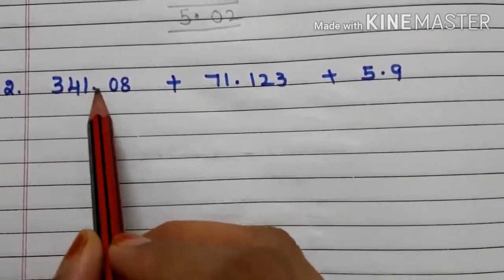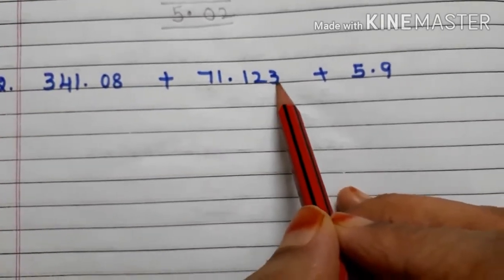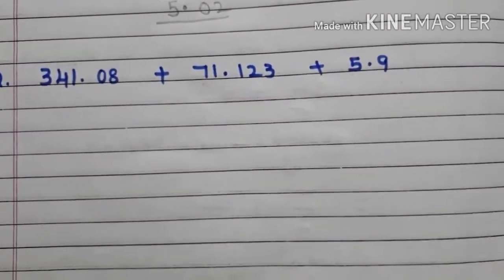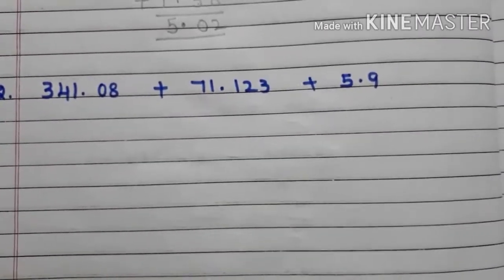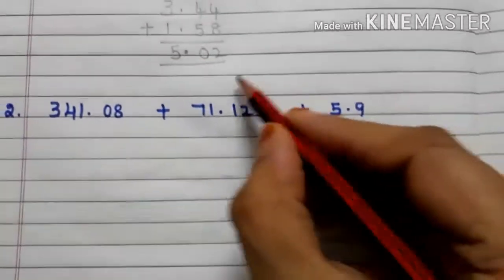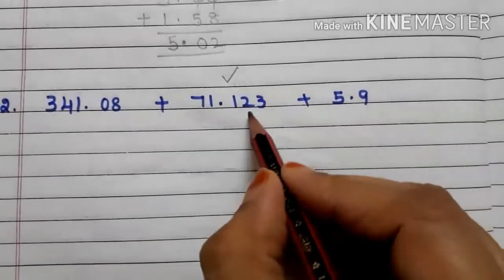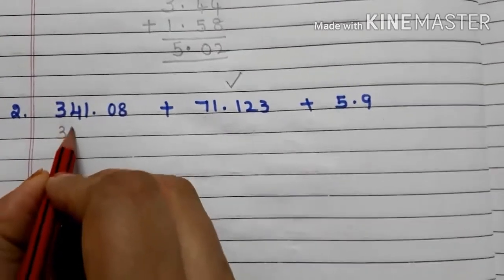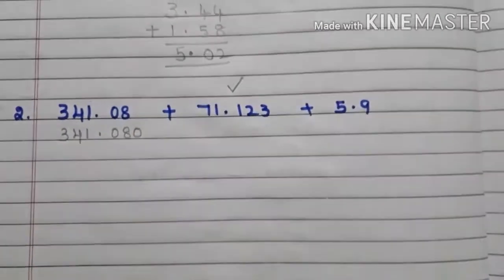Now let us go to the second example. Here we have 341.08 plus 71.123 plus 5.9. By observing these decimals we can say that these are unlike decimals. First we have to convert them into like decimals. Check which decimal number has the highest number of decimal places — 71.123 has 3 decimal places, the highest.